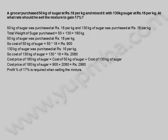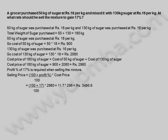A profit percentage of 17% is required when selling the mixture. Selling price is equal to (100 plus profit percentage) divided by 100, into cost price, which equals (100 plus 17) divided by 100 into 2,980, which equals 11.7 into 298, which equals 3,486.6 rupees. Selling price of the mixture is 3,486.6 rupees.